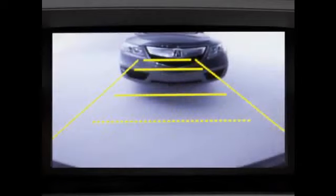While in reverse, the guidelines can be turned off by pressing and holding the Cancel button on technology package models. The guidelines will stay off until they are manually turned on again by the driver.